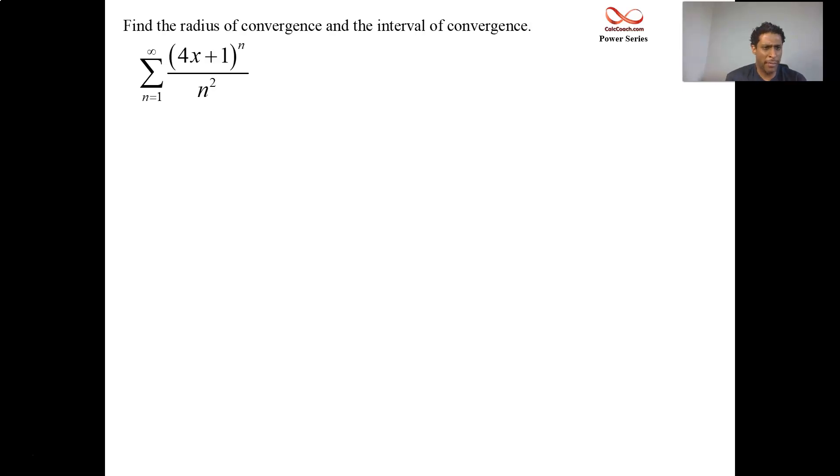This is a standard example here. We have a summation n equals 1 to infinity, where we have 4x plus 1 raised to the n, and that's all on top of n squared. Seems pretty simple, only those two terms. I really want you to do this for the first thing: I want you to recognize what the center is. The whole part that involves x needs to be set equal to zero.